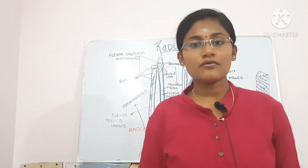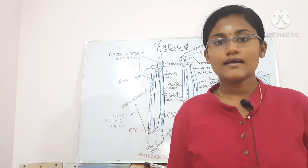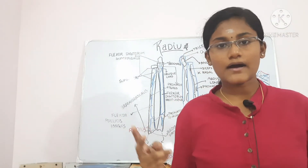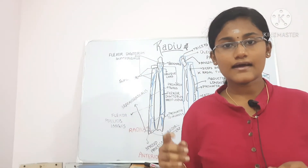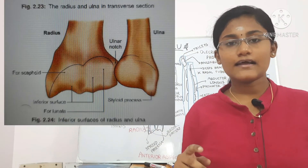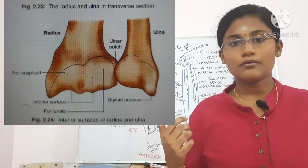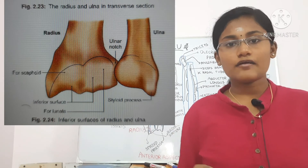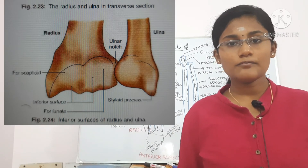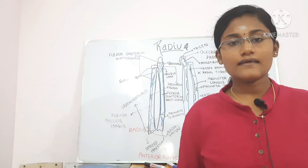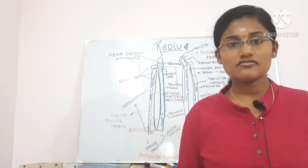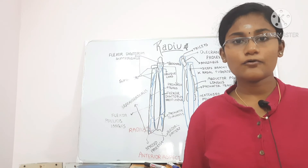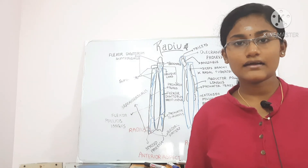The inferior surface is made up of two parts: a triangular area for articulation of the scaphoid bone and a quadrangular area for articulation of the lunate bone. The inferior surface forms the wrist joint by giving attachment to the capsule on its posterior and anterior margins.